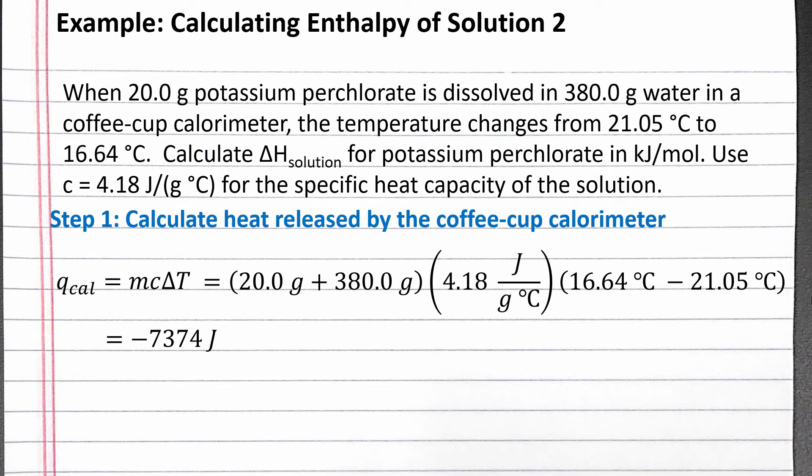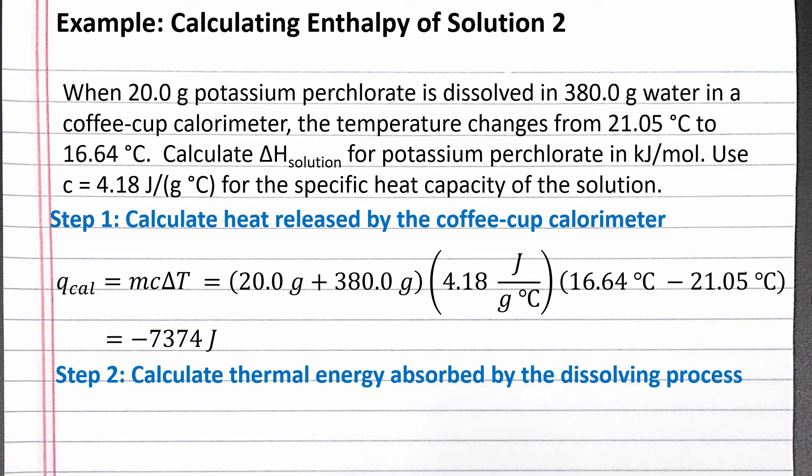Our next step is to calculate the thermal energy absorbed by the dissolving process. We know the dissolving process absorbs thermal energy because when an ionic solid dissolves in water and the temperature decreases, the process is endothermic. The temperature decreases because thermal energy is being absorbed by the dissolving process, converting thermal energy from the water into potential energy in the solution. So the energy absorbed has the opposite sign of the energy released by the calorimeter's contents.